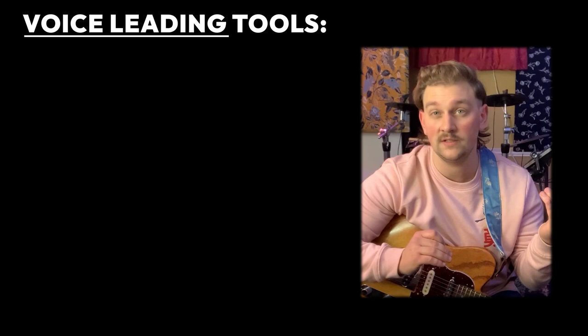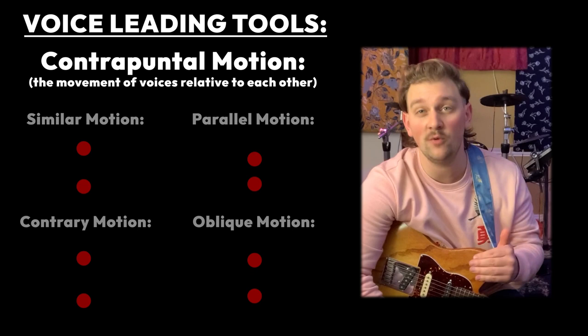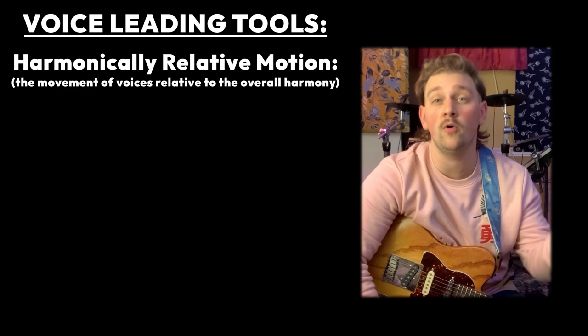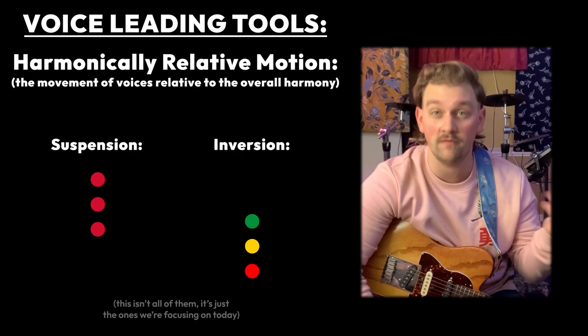When it comes to voice leading, there are basically two categories. There is contrapuntal motion — coming from counterpoint — which is how these voices move in relation to each other. Here you have things like oblique motion, parallel, similar, and contrary. And then you have the motion of the voices in relation to the overall harmony of the song, where you find things like suspension and inversion. We'll be focusing on those two in particular today.